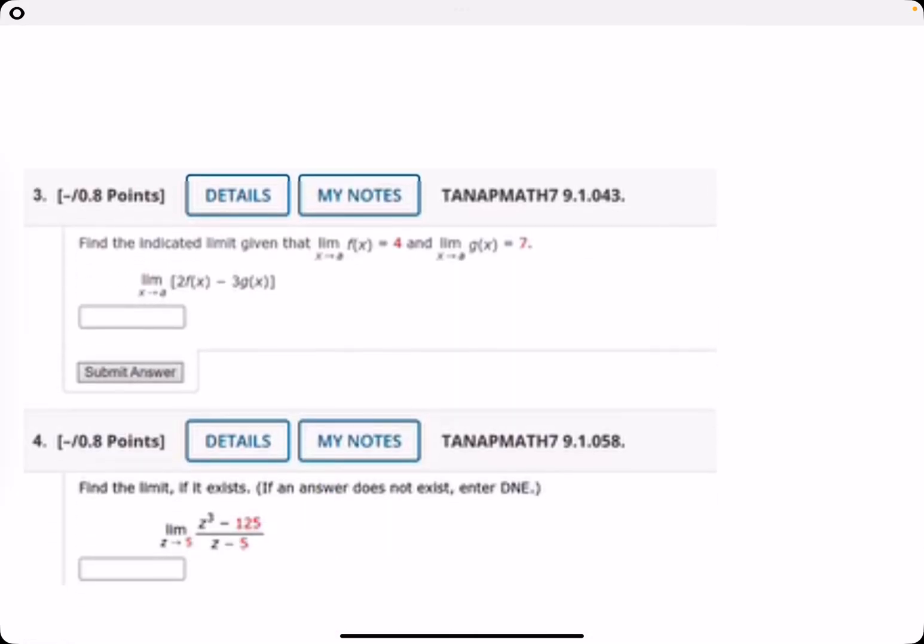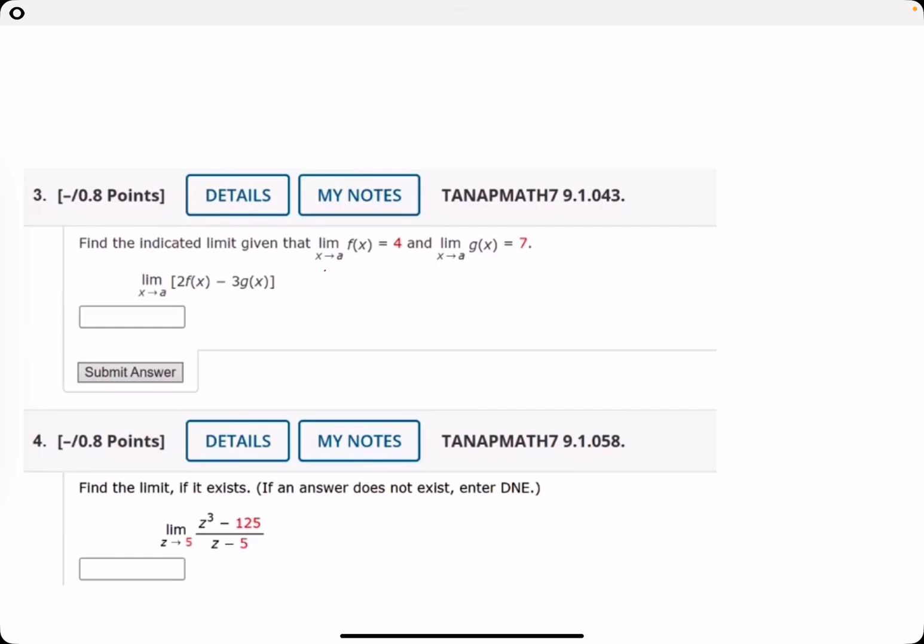Number 3, find the limit given that the limit of f is 4 and the limit of g is 7. That is basically just direct substitution. I'm not going to draw out the details, but you can do 2 times 4 minus 3 times 7. That's all there is to it. You get 8 minus 21, which is negative 13.